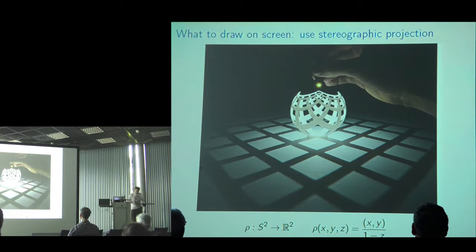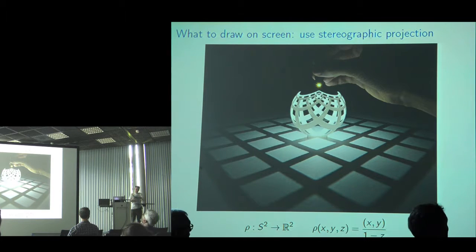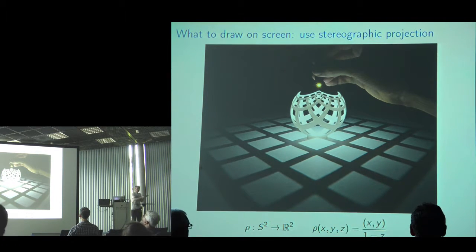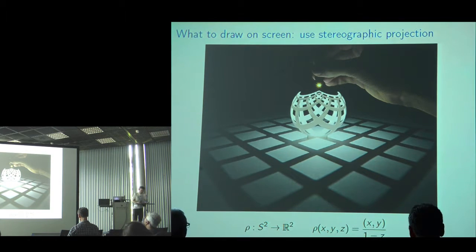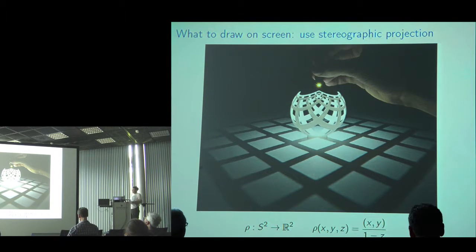So that hopefully explains something about what's happening when I move the iPad: I'm navigating through a three-dimensional space. Now the question is: what am I drawing on screen? What are all these shapes?